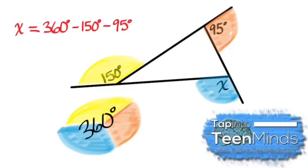And computing 360 minus 150 minus 95, we get 115 degrees for x.